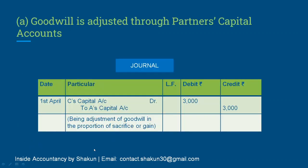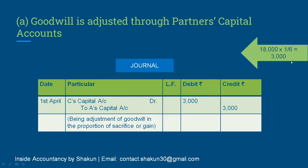Our journal entry for Method 1: since C is the gaining partner, C's capital account is debited; since A is the sacrificing partner, A's capital account is credited. The goodwill was valued at 18,000, so 18,000 multiplied by the proportion of sacrifice or gain — which from the working note is 1/6 — gives 3,000. Therefore, the gaining partner C is debited and the sacrificing partner A is credited with 3,000.